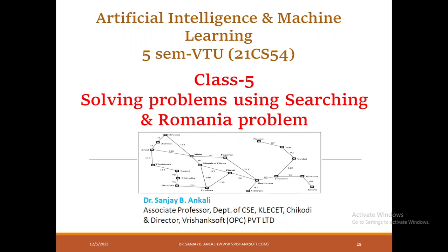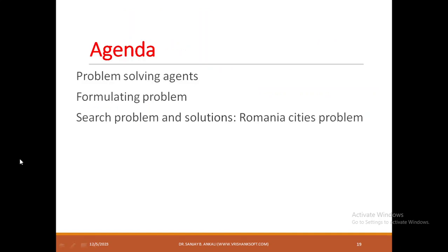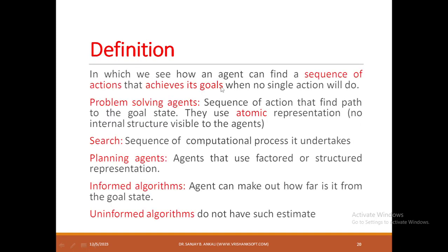Good morning everybody, welcome to class 5 of Artificial Intelligence and Machine Learning. In today's class we will start with the topic 'Solving Problems Using Searching' and we will solve the Romania problem. The agenda of this class is: we will define what is a problem-solving agent, we will see how to formulate problems, and we will take an example — the Romania city problem — and apply it to search problems to find a solution.